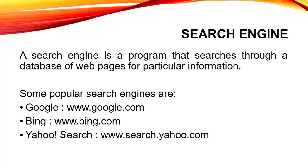Whenever we search anything we get various links, where each link is an individual web page which contains some results regarding our search query. Some most commonly used search engines are Google, Bing, and Yahoo. On a monthly basis, Google is one of the most popularly used search engines, followed by Bing and Yahoo in second and third position.